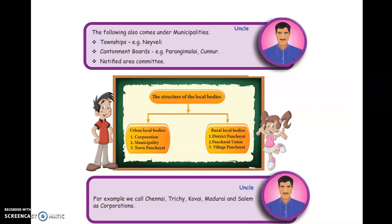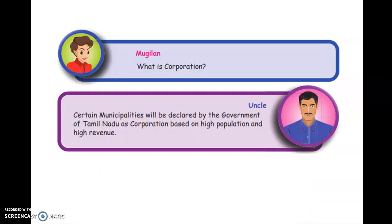Mugila, for example, we call Chennai, Trichy, Coimbatore, Madurai, and Salem as corporations. Uncle, what is a corporation? Certain municipalities are declared by the government of Tamil Nadu as corporations, based on their high population and high revenue.